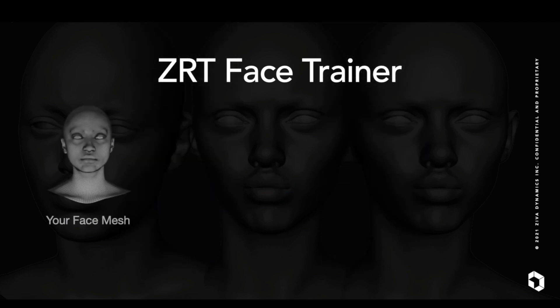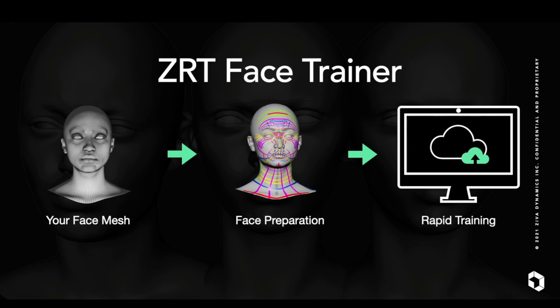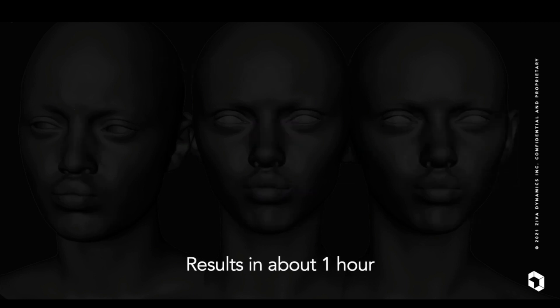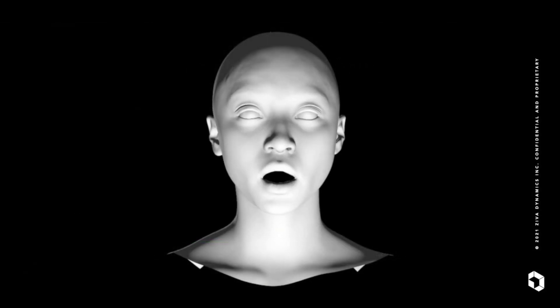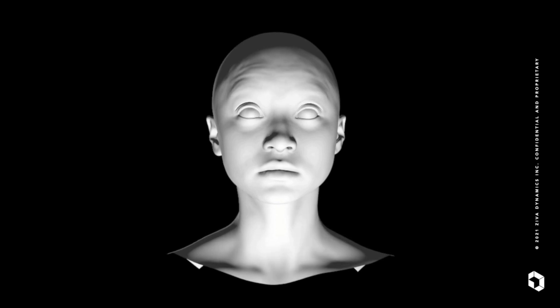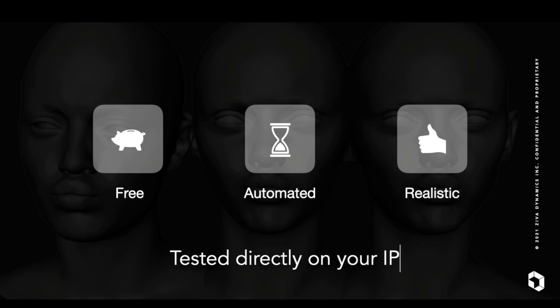Simply pick one of your own existing face models and prepare it for training with our face preparation instructions. Then kick off the pipeline with our user-friendly access page. In roughly one hour, you'll receive a high-quality render of your custom face mesh performing a complex range of motion. Your static character has been injected with the physics and dynamics that set us apart from pixels on a screen. This is a free and fast way to visualize the high-performance potential of Ziva RT on your own IP.